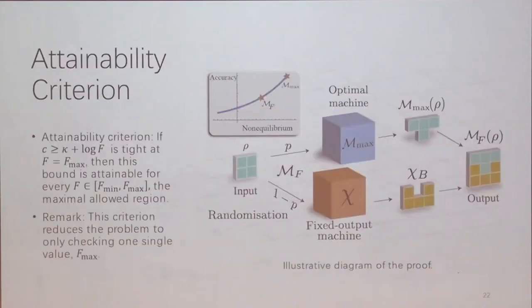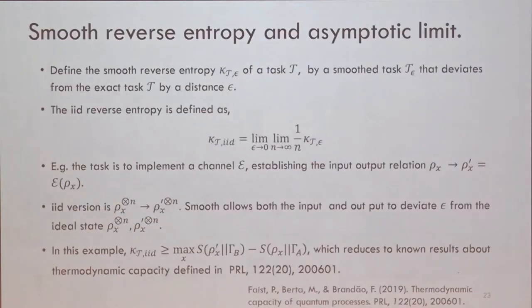Our result also can be reformulated into the accuracy you can achieve when the non-equilibrium resources at hand are limited. And we also proved tools to check the tightness of our bounds. So we proved that the only point you have to check tightness is the maximum or optimal machine with maximal accuracy possible. And we proved that if the bound is tight at this point, then it's automatically tight for the maximally possible region. And all the machines here are a mixture. Optimal machines are a mixture of the best machine and the fixed output machine. And we also consider how our results reduce to i.i.d. limits. So we take the first smooth and take the limit to the thermodynamic limit and reduce back to known results, which is nice.